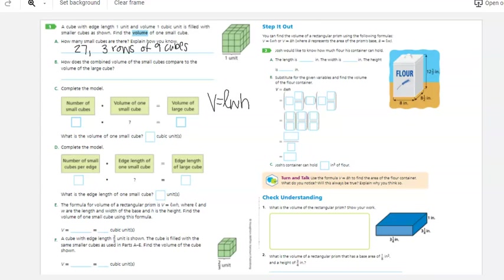How does the combined volume of the small cubes compare to the volume of the large cube? The volume is equal.